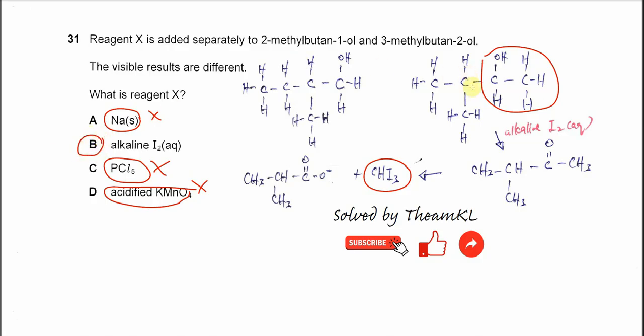The 3-methylbutan-2-ol will produce the yellow precipitate, the iodoform. And this 2-methylbutan-1-ol, no yellow precipitate. Okay, that's all, thank you.